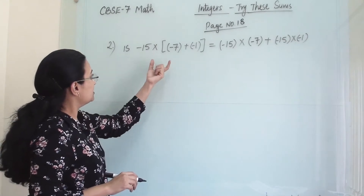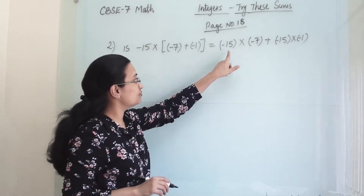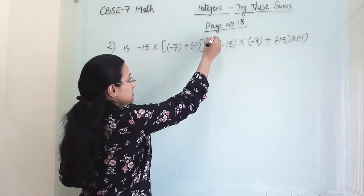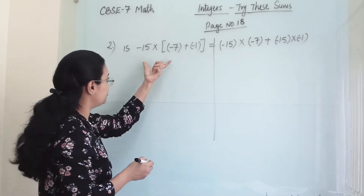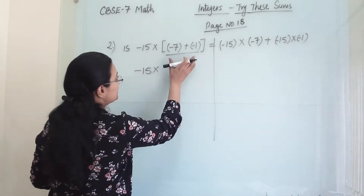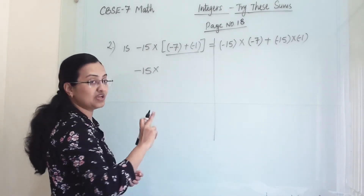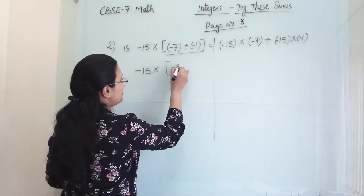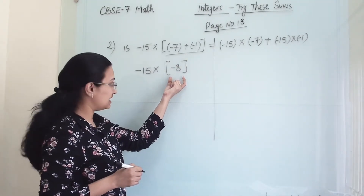Next one: minus 15 into bracket minus 7 plus minus 1 is equal to minus 15 into minus 7 plus minus 15 into minus 1. This is exactly the same as what we did earlier. First we solve the bracket for minus 15. Minus minus will become plus, so we have to add them, and it carries the bigger number sign. So it will be minus 8 — our answer from this addition is minus 8.